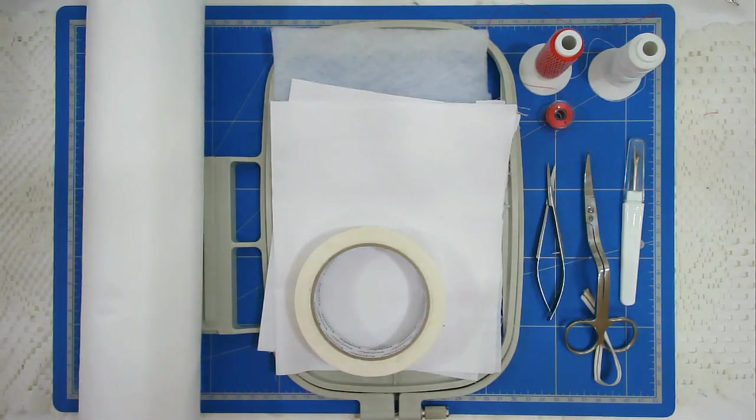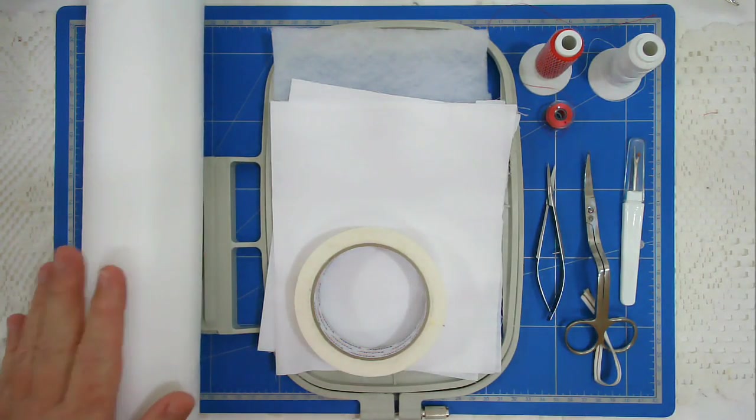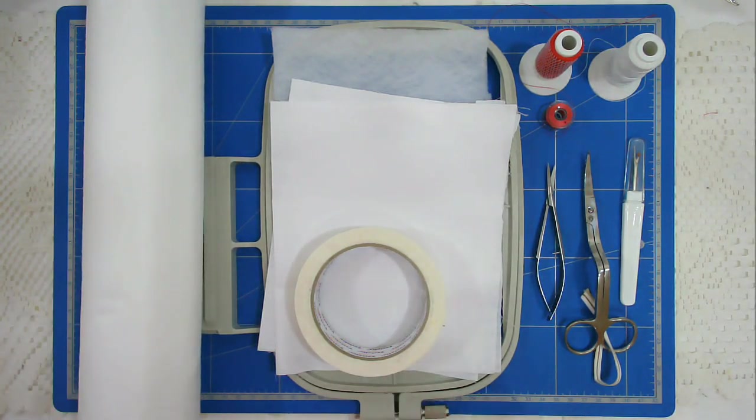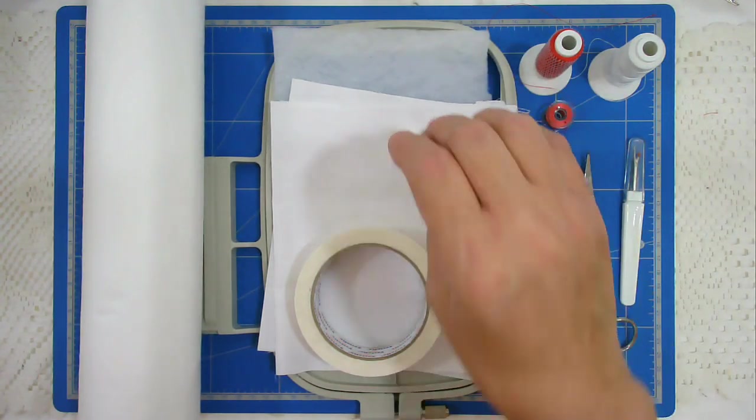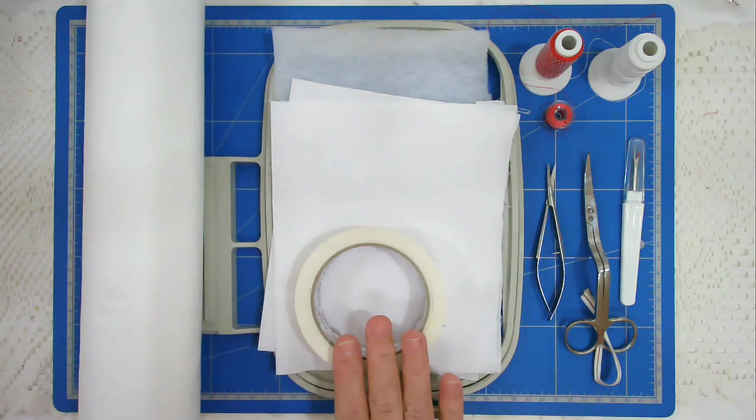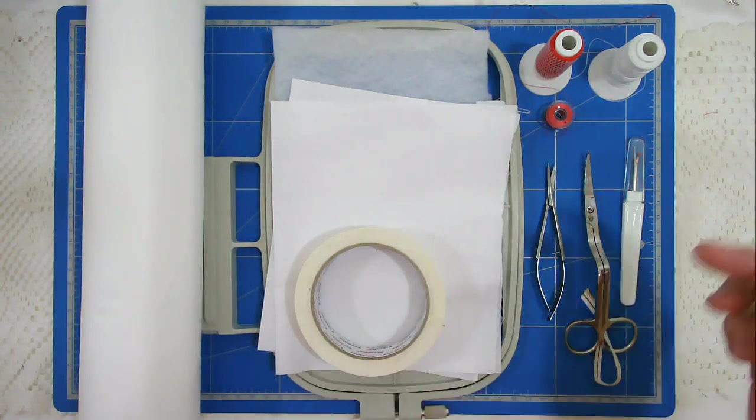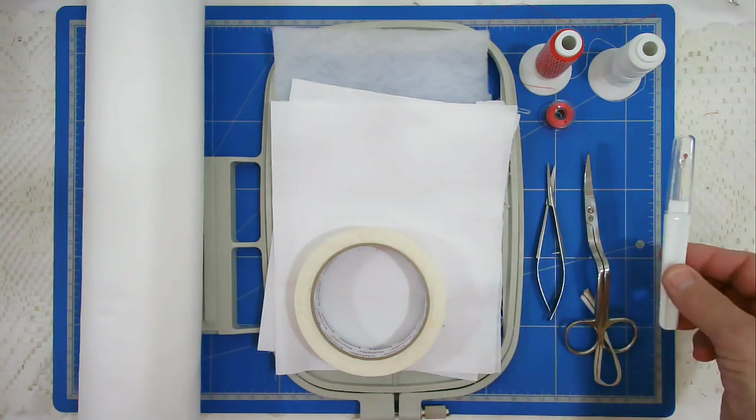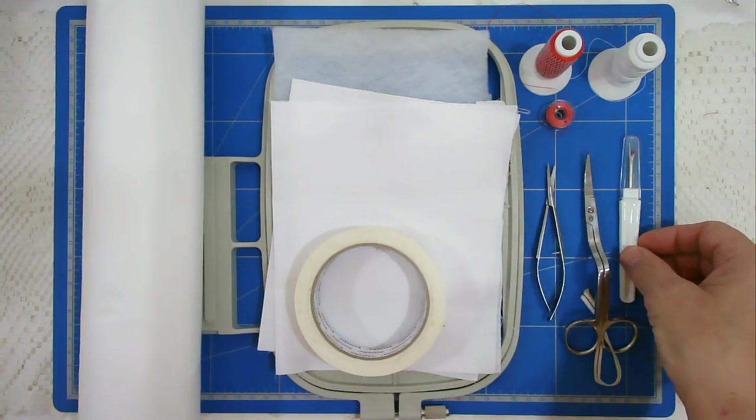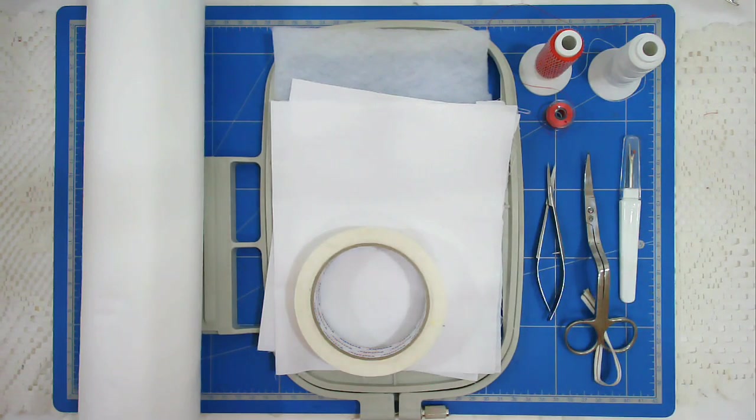To make this message on a bottle, I'm using wash away stabilizer, my 5x7 hoop, fleece batting, thin cotton which I've got doubled over, masking tape or painters tape, my threads with a matching bobbin, scissors, and a stitch unpicker because I need a sharp implement that's going to lift the fabric and the batting without damaging the stabilizer underneath.